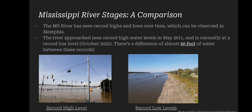Now let's look at more local river stages. We can look at a comparison of the Mississippi River between when it was at a higher level and when it was at a lower level. The Mississippi River has seen record highs and lows over time which can be observed in Memphis. The river approached a near record high water level in May 2011, which is pictured on the left below.